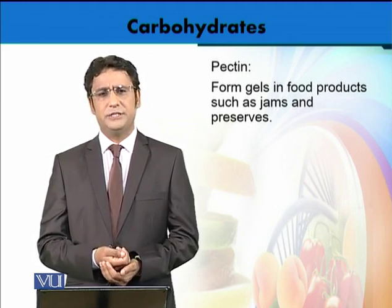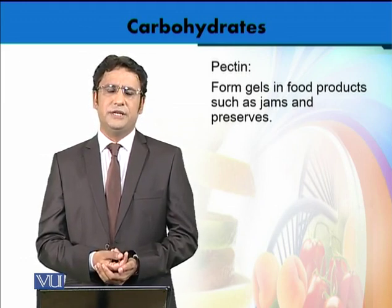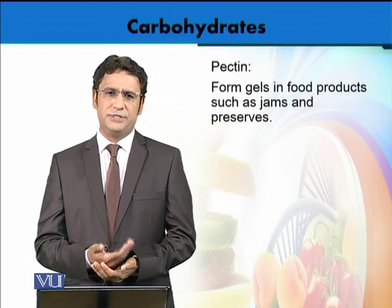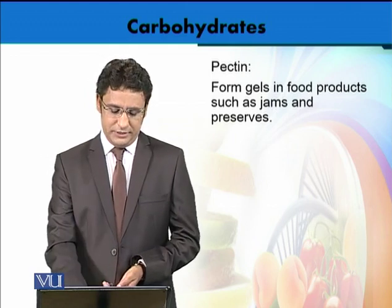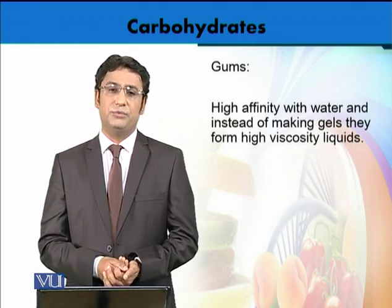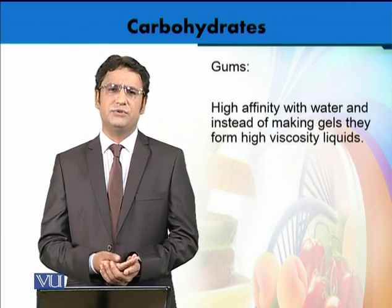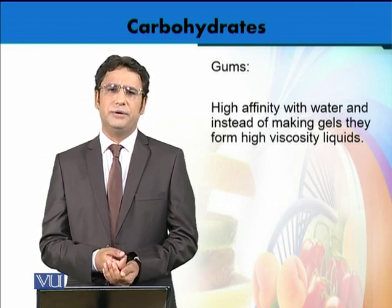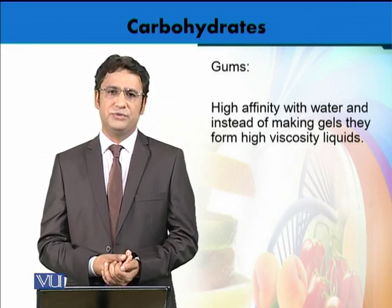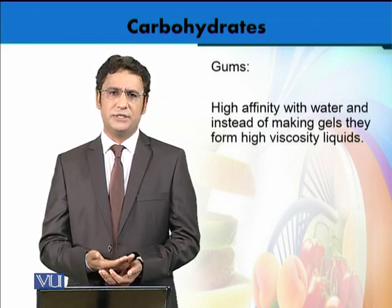Pectins are another important food substance which are polysaccharides but can be used for various applications in food — for example, jams and jellies all have a gel structure that comes from pectin. Gums are another important food ingredient used for multiple reasons, such as increasing the viscosity of syrups, juices, or squashes. Gums are also industrially important compounds used in the food industry as ingredients, and they are also examples of polysaccharides.